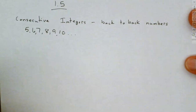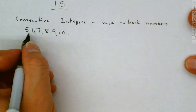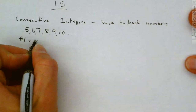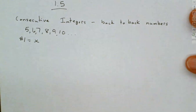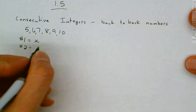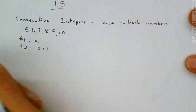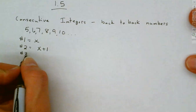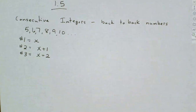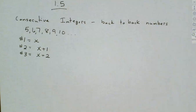These have a gap of 1 — there's 1 between each one of these. So if it's a consecutive integer question, the first number is going to be called x, the second number is x plus 1, and the third number would be x plus 2. If they are consecutive integers, they have a gap of 1, so each time we're going to add 1.